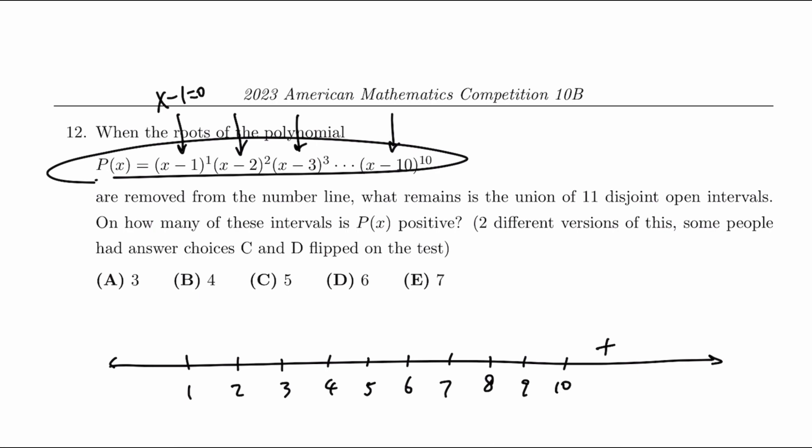And if we shift from the interval above 10 to some number between 9 and 10, then the only part that flips the sign is going to be X minus 10 to the 10th power, which is going to be—now it will be something let's say 9.5 minus 10 to the 10th power, or X minus 10 where X minus 10 is going to be negative. So X minus 10 flips the sign.